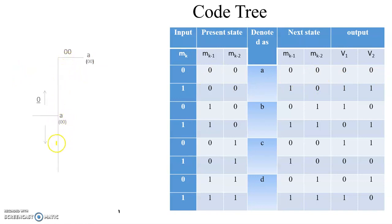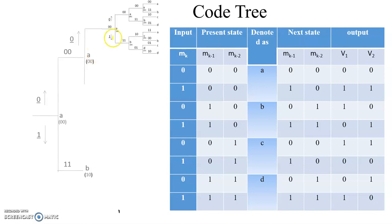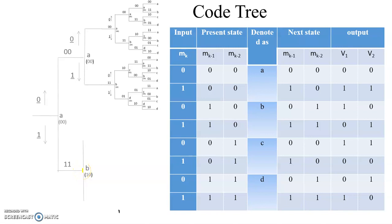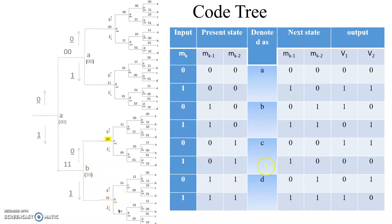Next, at state A with input 1, we go to the next state 1,0, which is state B, and the output 1,1 is written here. At state A with input 0, we go to state A and output is 0,0. If input is 1, we go to state B and the output is 1,1. At state B, that is the 1,0 state, if input is 0, we go to next state 0,1, that is state C, and the output is 1,0. If input is 1 at state B, we go to state D (1,1) and the output is 0,1.